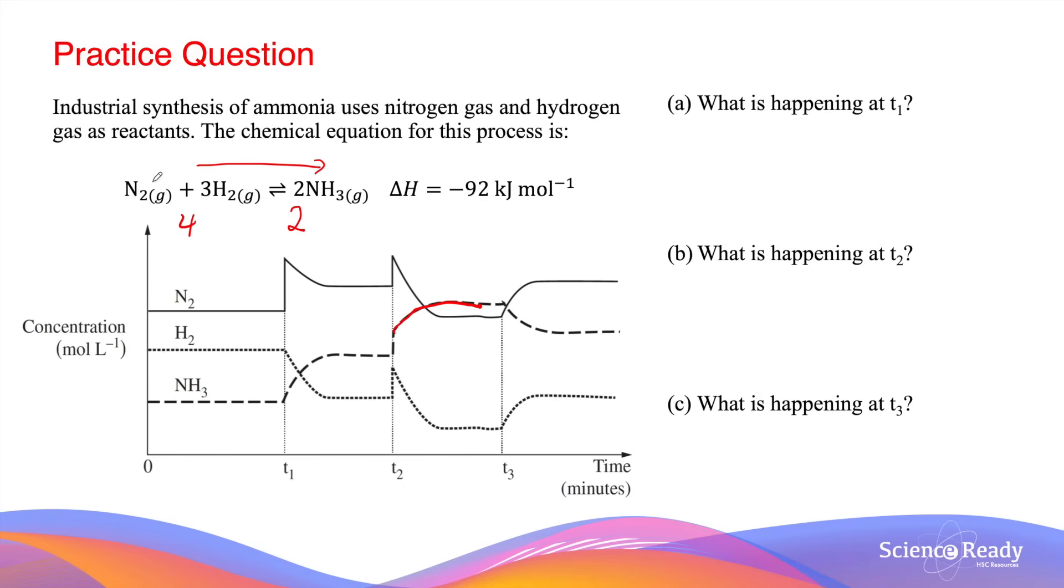while the concentrations of nitrogen and hydrogen gas both decrease by the proportions that are indicated by their stoichiometric ratios. And of course, these concentrations will continue until the reaction reaches a new equilibrium.